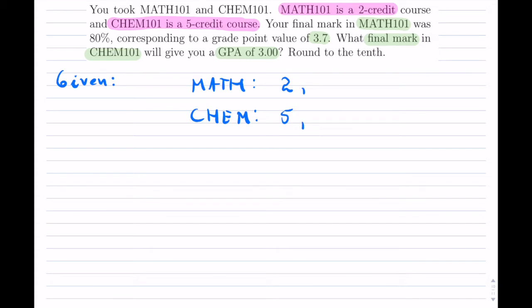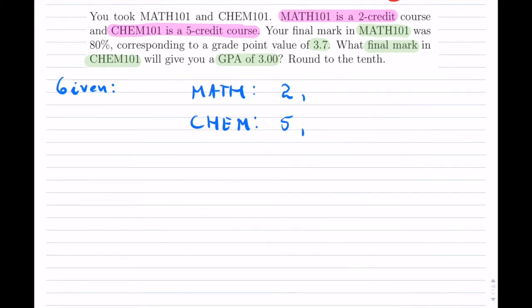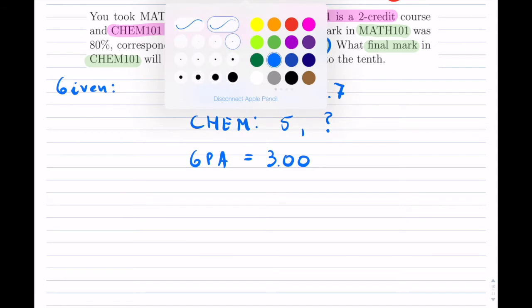Now because we're dealing with GPAs, I am going to use the GPA here. So I know that math was 3.7, but I do not know the chemistry mark. So I don't know that one. I do know that the overall GPA was 3.